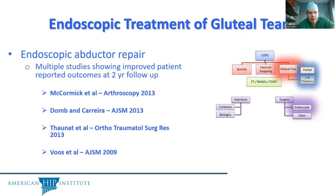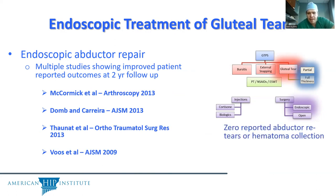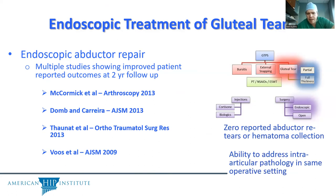Looking at the data for endoscopic repair, there have been multiple studies evaluating this showing lower rates of soft tissue complications — infections, hematomas, and similar issues. There are also lower retear rates in the endoscopic literature. However, the tears being treated endoscopically are typically lower grade, so it's hard to compare directly. You're generally not going to try to treat a full thickness retracted abductor tendon endoscopically.